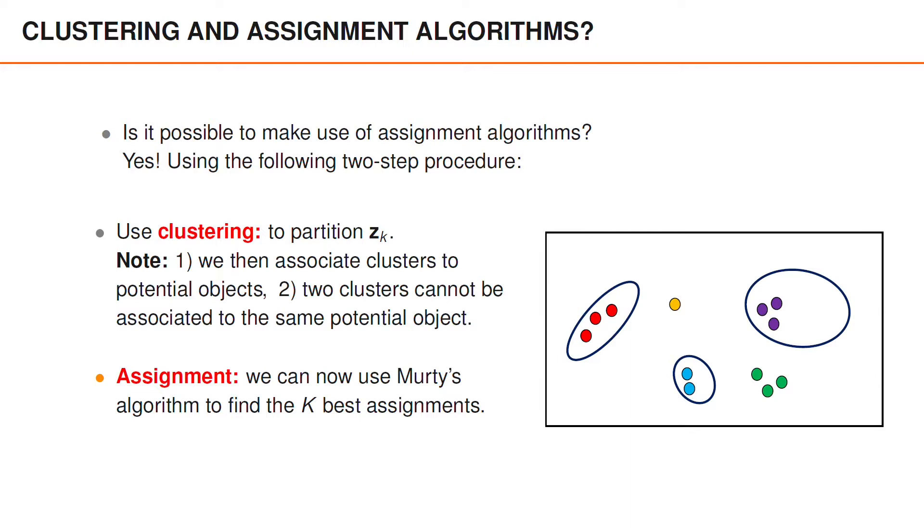To illustrate the assignment problem that we are trying to solve, you can again consider the example where the predicted PMB contains three Bernoulli random finite sets with the three ellipsoids in the figure illustrating their predicted measurement distributions. In this assignment problem, we need to assign or associate clusters to these Bernoulli components or to the Poisson point process.